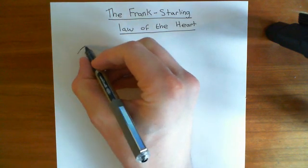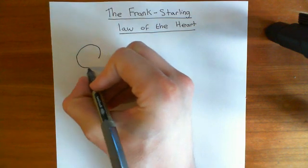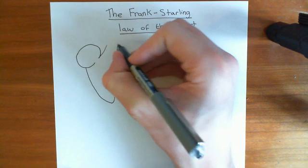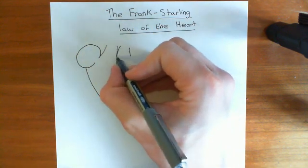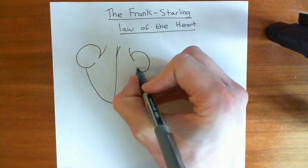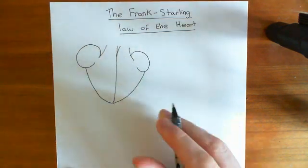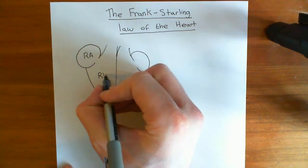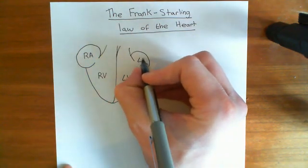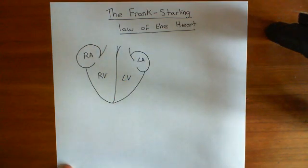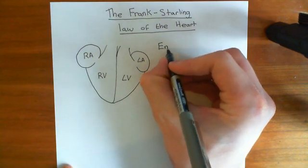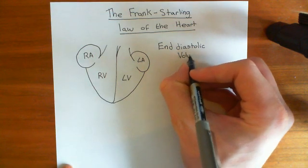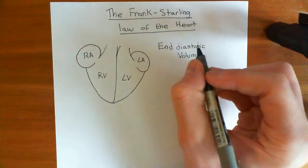We'll draw our picture of the heart. Here is our right atrium, here's our right ventricle, here comes the pulmonary trunk, and here is our aorta with our left atrium. So let's label up these chambers: right atrium (RA), right ventricle (RV), left ventricle (LV), and left atrium. Now I need to give you a piece of terminology: the end diastolic volume, which is the volume of blood in the left ventricle at the end of diastole.